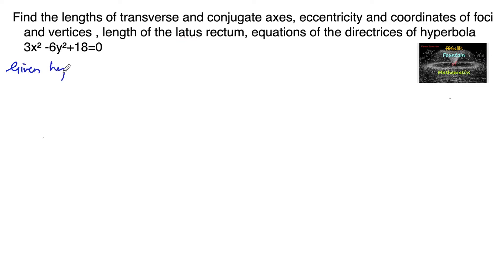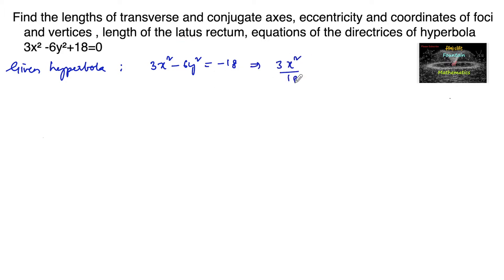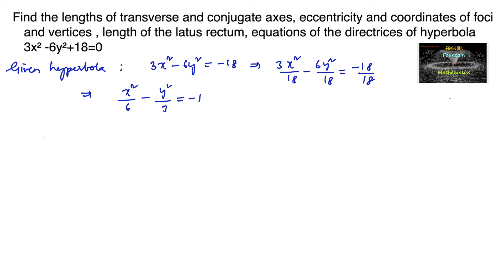So the given hyperbola is 3x² minus 6y² equals minus 18. Dividing by 18: 3x²/18 minus 6y²/18 equals minus 1, which gives x²/6 minus y²/3 equals minus 1. So this is a conjugate hyperbola.